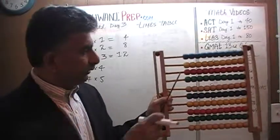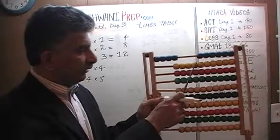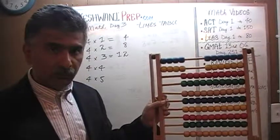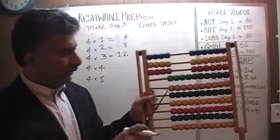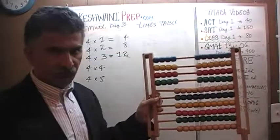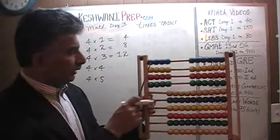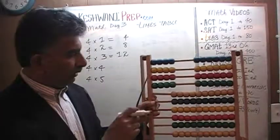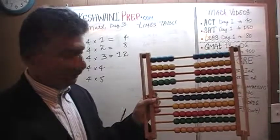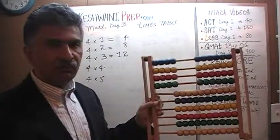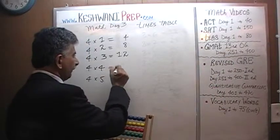Four fours — here is the first group of four. We need four fours: here is the second group of four, here is the third group of four, and here is the fourth group of four. Four fours are — let's find out: one, two, three, four — five, six, seven, eight — nine, ten, eleven, twelve — thirteen, fourteen, fifteen, sixteen. Four fours are sixteen.